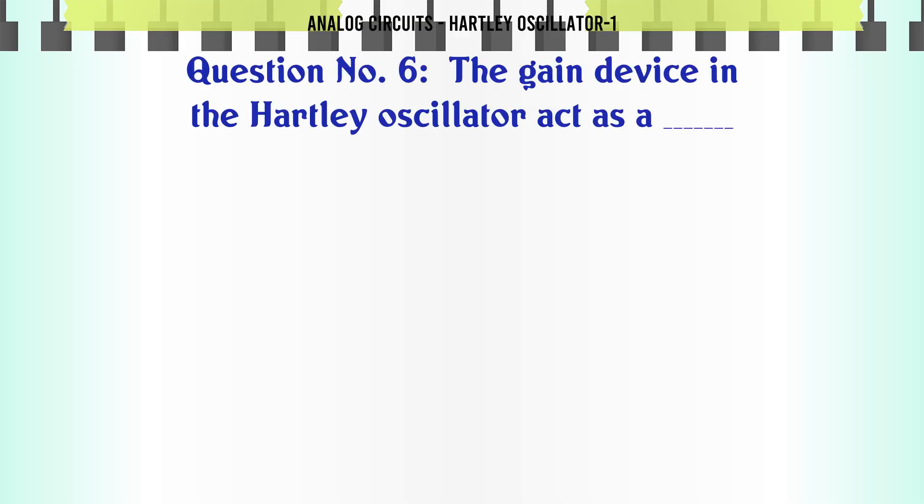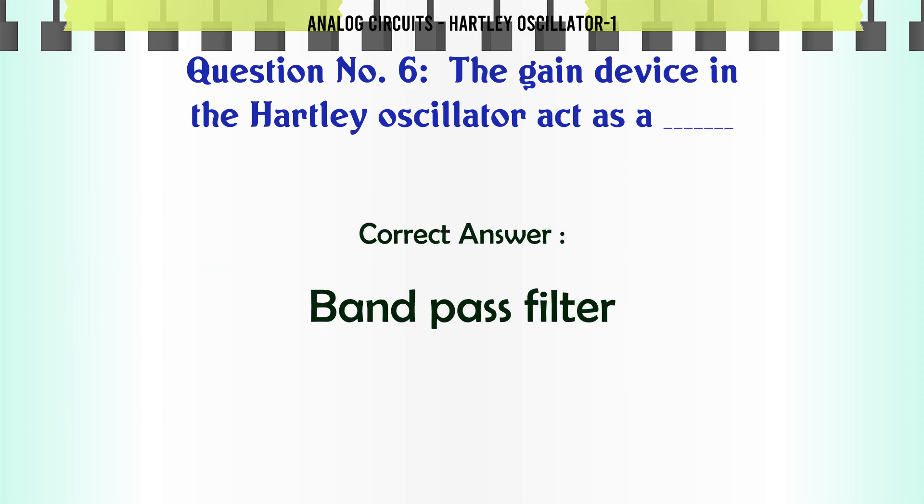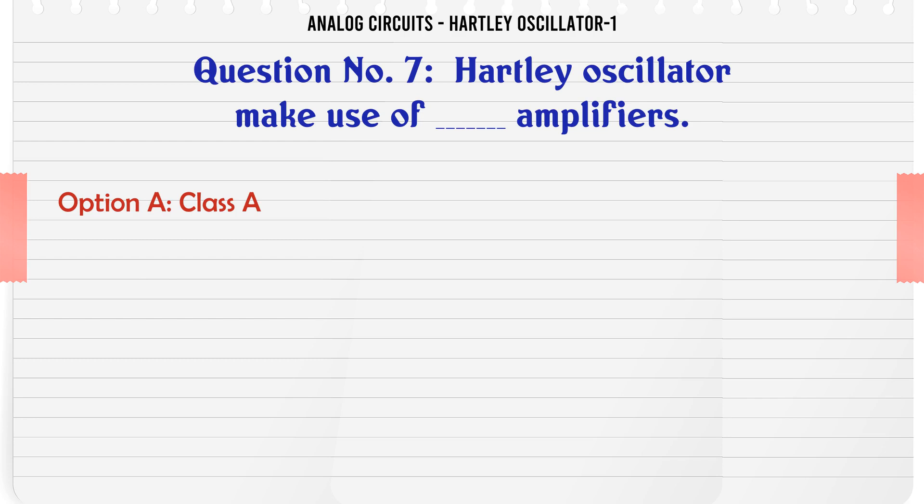the Hartley Oscillator acts as: A: low pass filter, B: high pass filter, C: band pass filter, D: band rejection filter. The correct answer is band pass filter. Hartley Oscillator makes use of amplifiers: